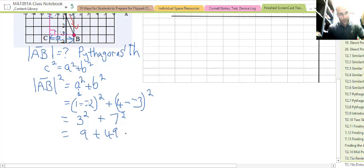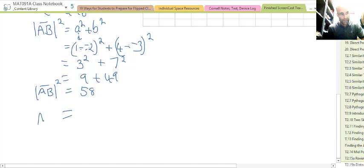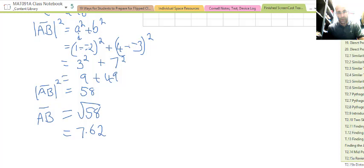So AB² is 58. And you might remember from Pythagoras we have to then take the square root to get the length of AB. So AB is the square root of 58. Using our calculator we get 7.62 if we round to two decimal places.